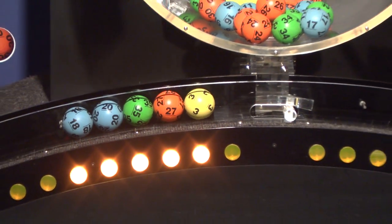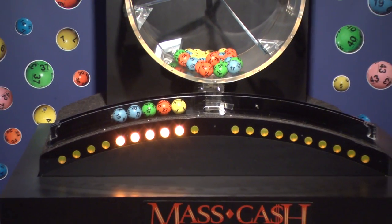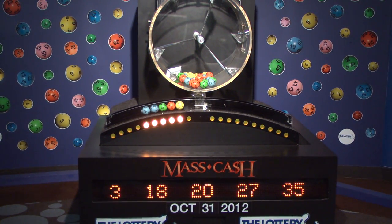Once again, the winning MassCash numbers for Wednesday, October 31st are 3, 18, 20, 27, and 35.